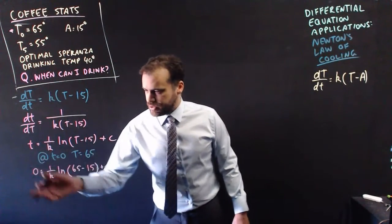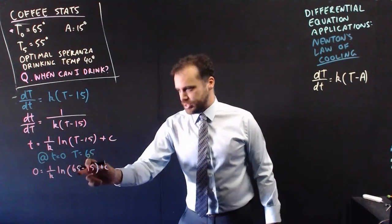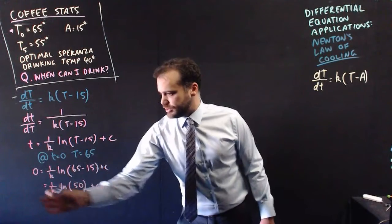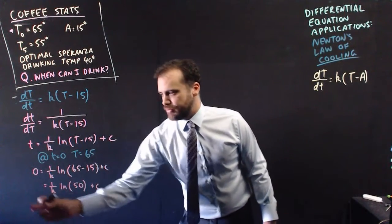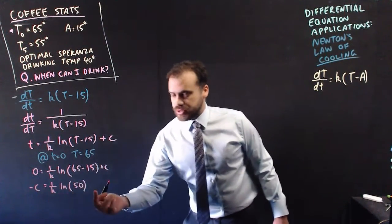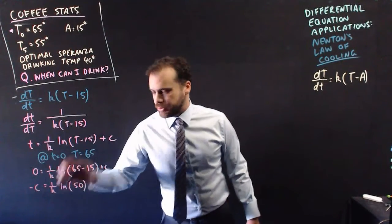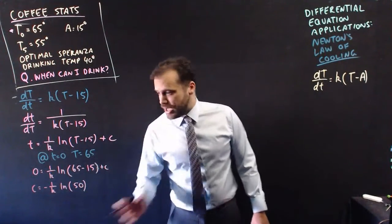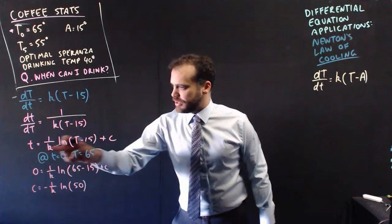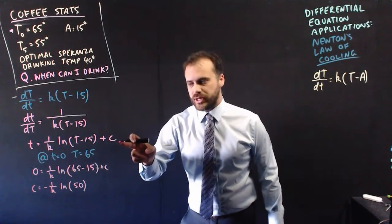So I've subbed that in there. t equals 0, capital T equals 65. 65 minus 15, that bit's going to be 50 there. That 0 is still there. I've got a plus c on this side. I can move it over to this side to be a negative c. But of course, if negative c equals this, positive c will equal the negative of that. So now I have a c value of negative 1 on k ln 50. And I can sub that back into this equation right here.